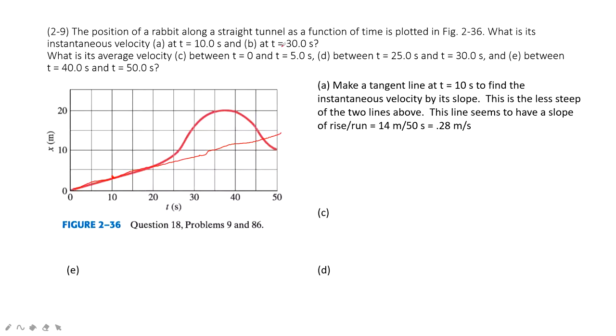And then when we want to find the instantaneous velocity at t equal to 30, so 30 is this one. Then we need to draw the tangent line there, so then it should be this one.